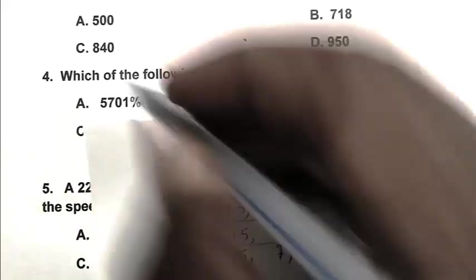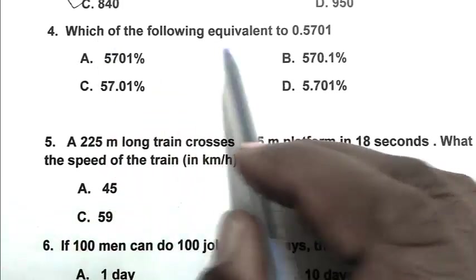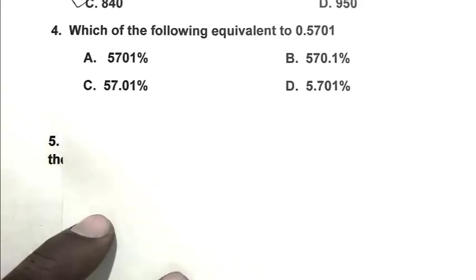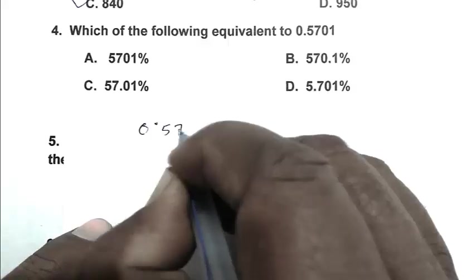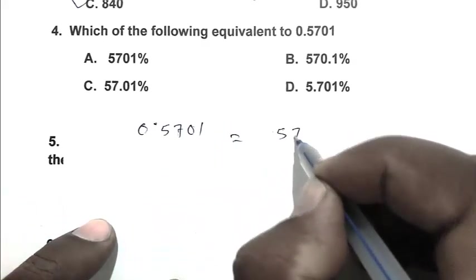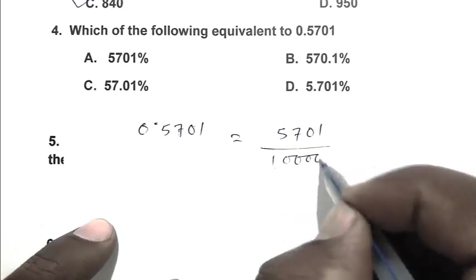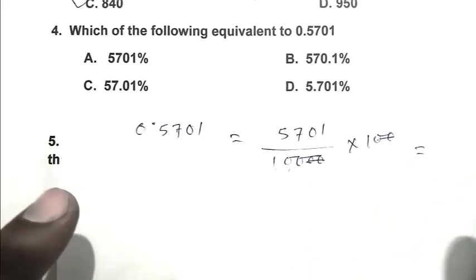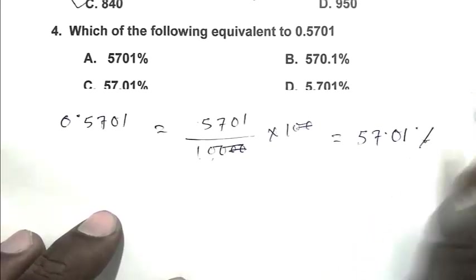Question number 4: Which of the following is equivalent to 0.5701? So friend, we convert it into percentage. That is 0.5701 equals 5701 upon 10,000 multiplied by 100. So it becomes 57.01 percent. So C is the right answer.